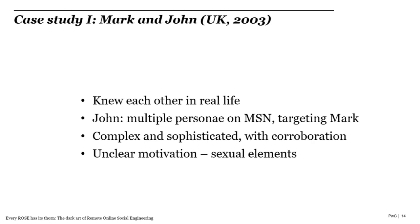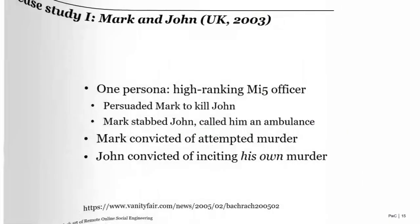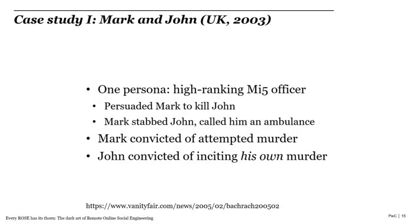The plots John put together were extremely convoluted and complex, with multiple characters corroborating each other. There were sexual elements to this case study. The case ends with one of John's personae — a high-ranking MI5 officer — persuading Mark to kill John for various convoluted reasons. Mark was persuaded, met John in Manchester, stabbed him, and then phoned him an ambulance. John survived. Mark was convicted of attempted murder. And John, to my knowledge, remains the first person ever in the UK to be convicted of inciting their own murder.